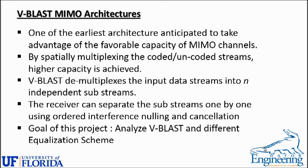To solve the problem of D-BLAST, V-BLAST came into the picture — one of the earliest architectures anticipated to take advantage of the favorable capacity of MIMO channels. It basically works by spatially multiplexing coded or uncoded streams, achieving higher capacity. V-BLAST demultiplexes the input data streams into N independent substreams, and the receiver can separate the substreams one by one using ordered interference nulling and cancellation. The main goal of this project is to analyze V-BLAST performance and how different equalization schemes work within the V-BLAST architecture.